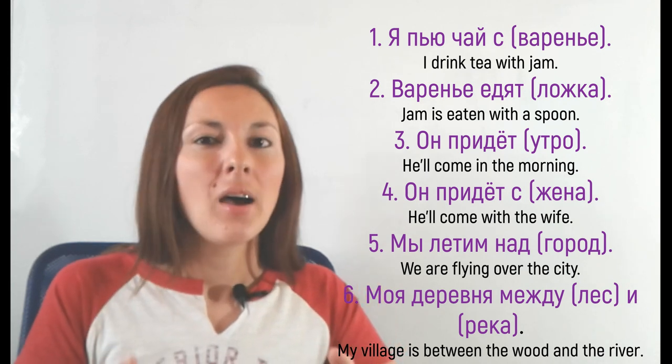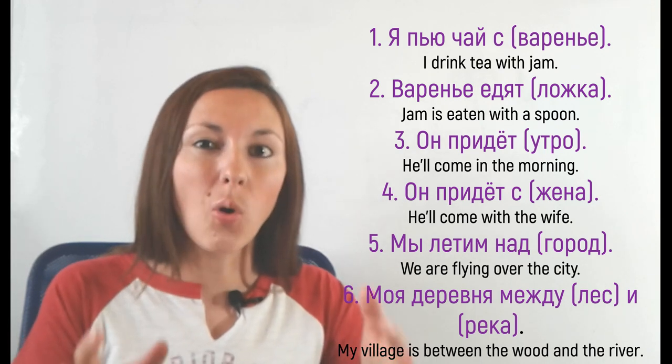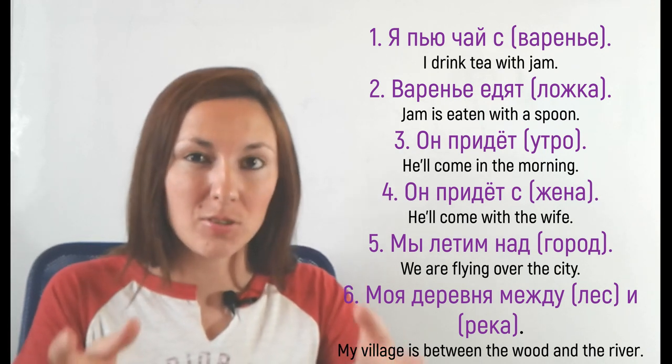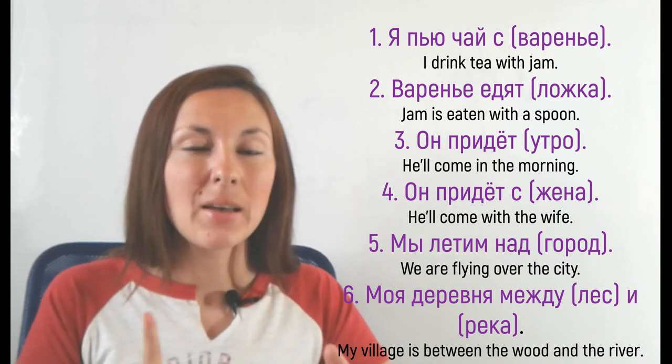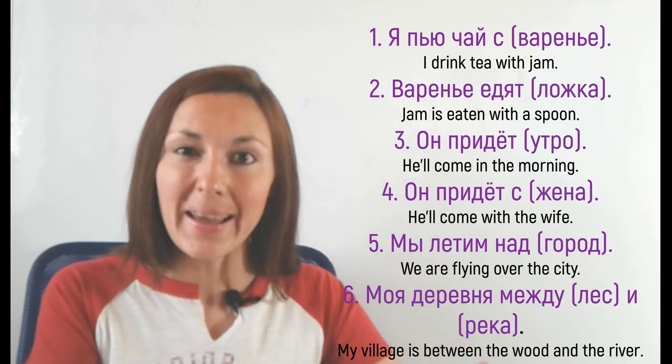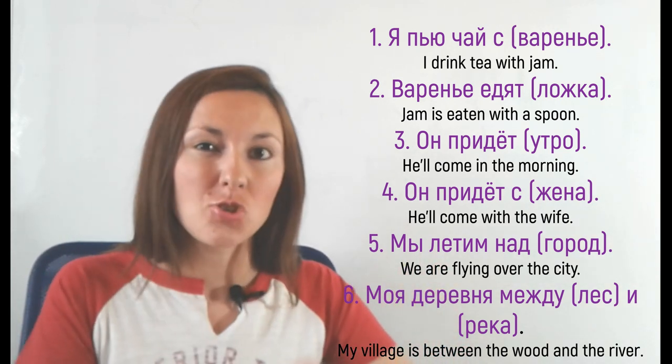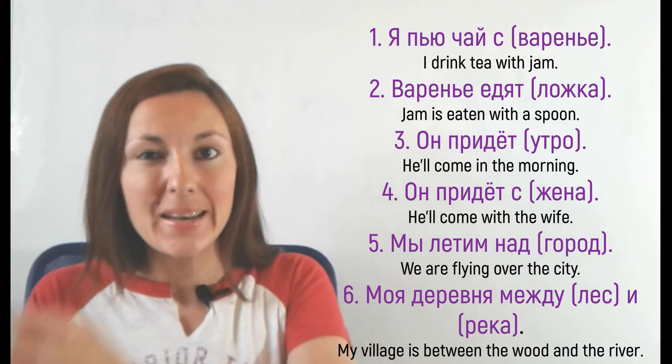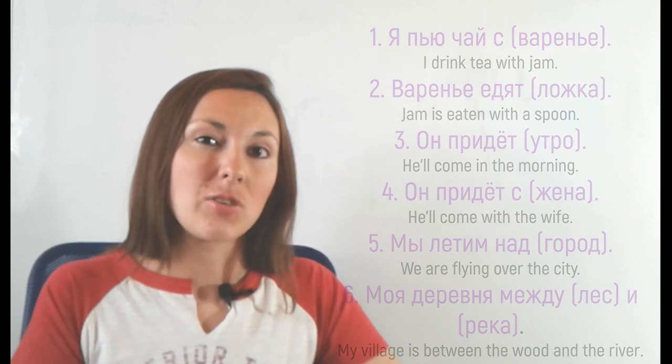Number five, Мы летим НАД ГОРОД. ГОРОД is a city. You have to put ГОРОД in the instrumental case. And number six, МОЯ ДЕРЕВНЯ МЕЖДУ ЛЕС И РЕКА. ЛЕС should be in the instrumental case. РЕКА should be in the instrumental case. Put your answers in the comment section or send them on Facebook or Twitter.